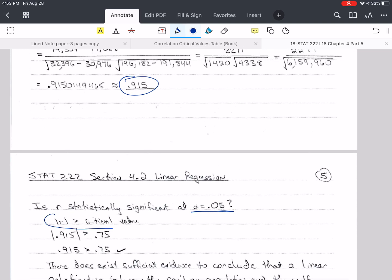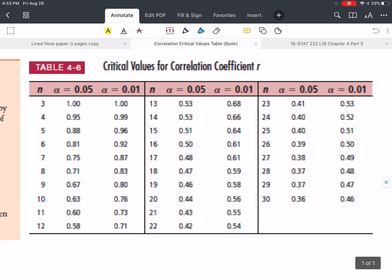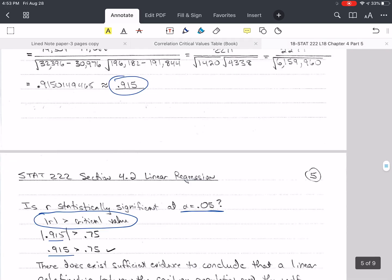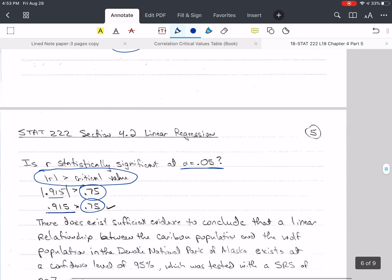So we have to check this statement to determine if it is statistically significant. If this statement is true, then r is statistically significant. I have a value of 0.915, and the absolute value stays the same because there's no negative. Now n is 7, so I go over to my table and look for n equals 7 with alpha equals 0.05 in the first column, and I find that my critical value is 0.75. So is 0.915 greater than 0.75? Yes, it is.